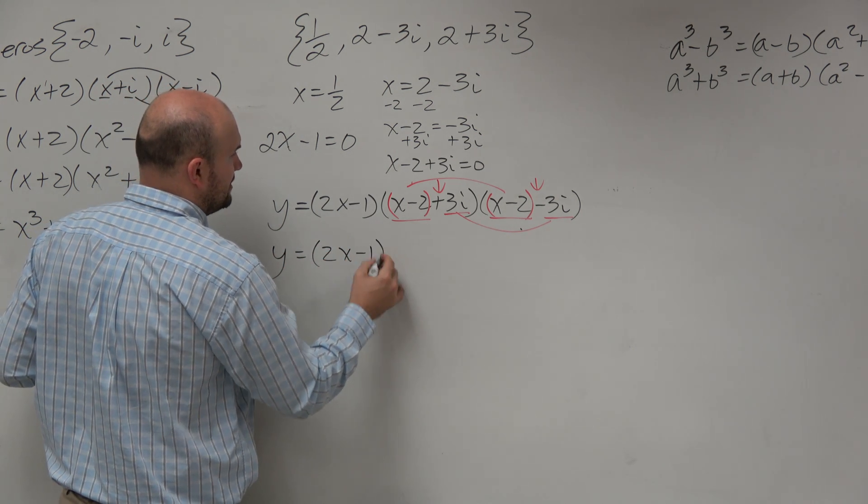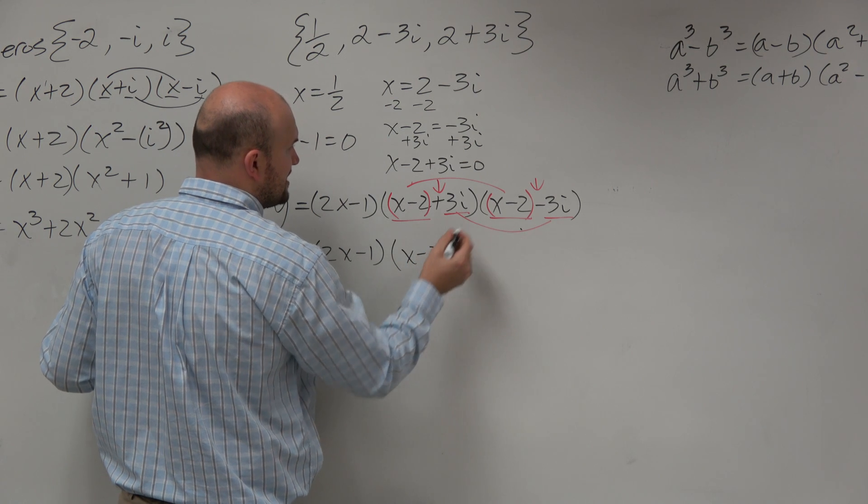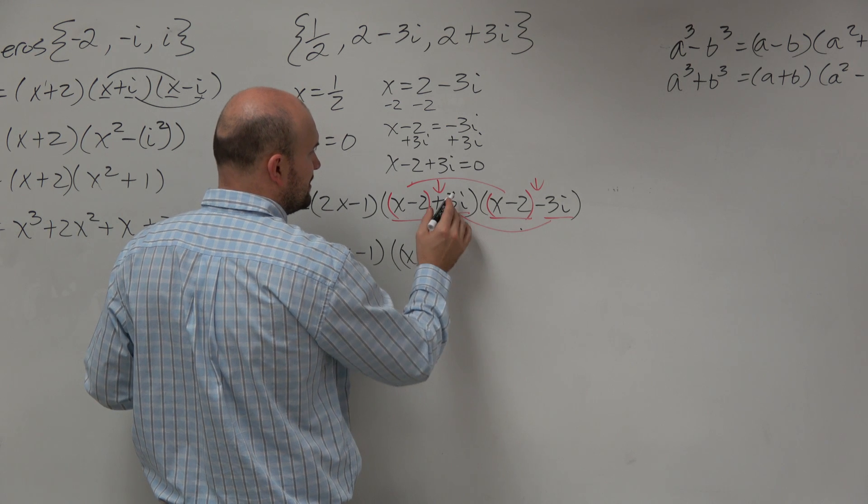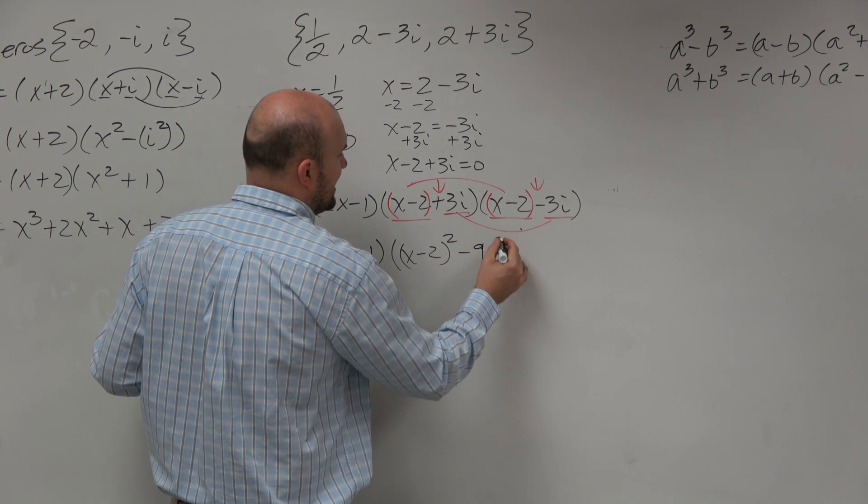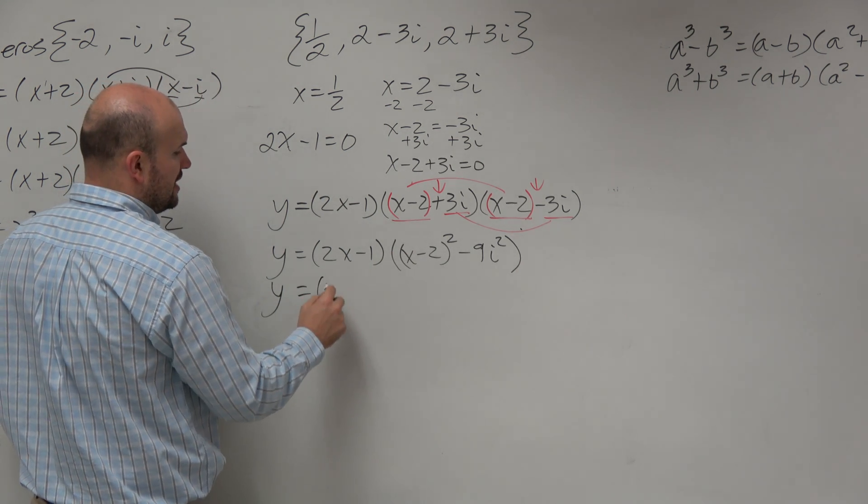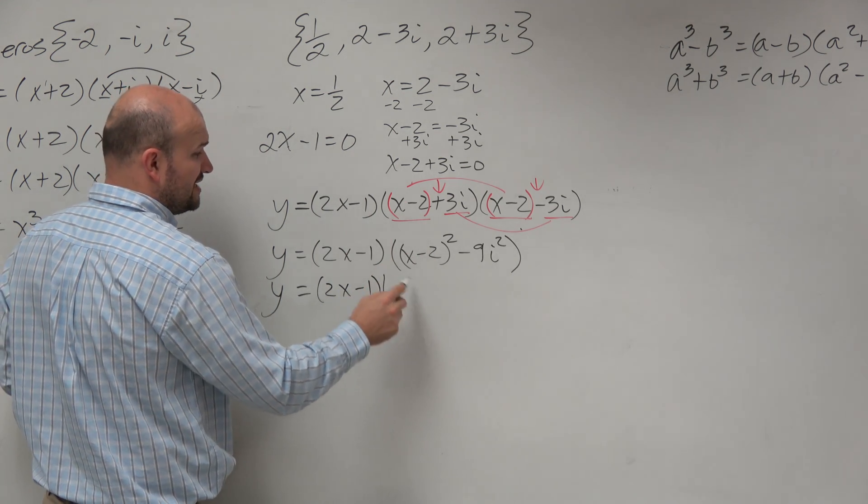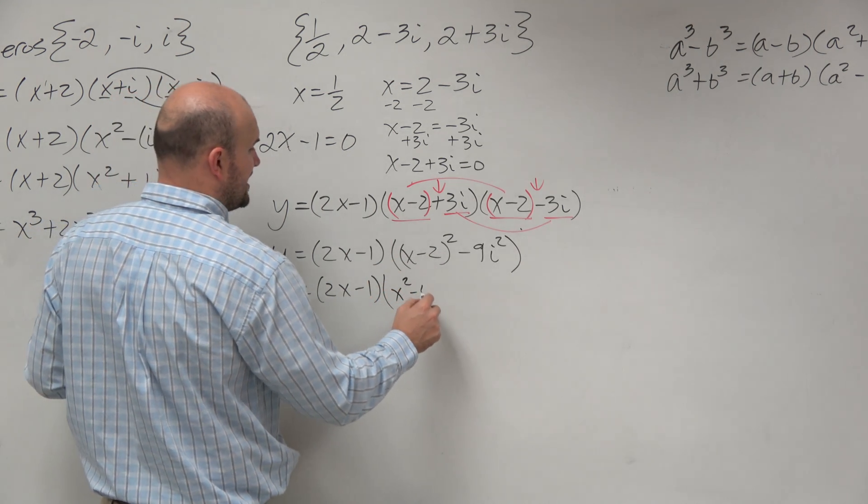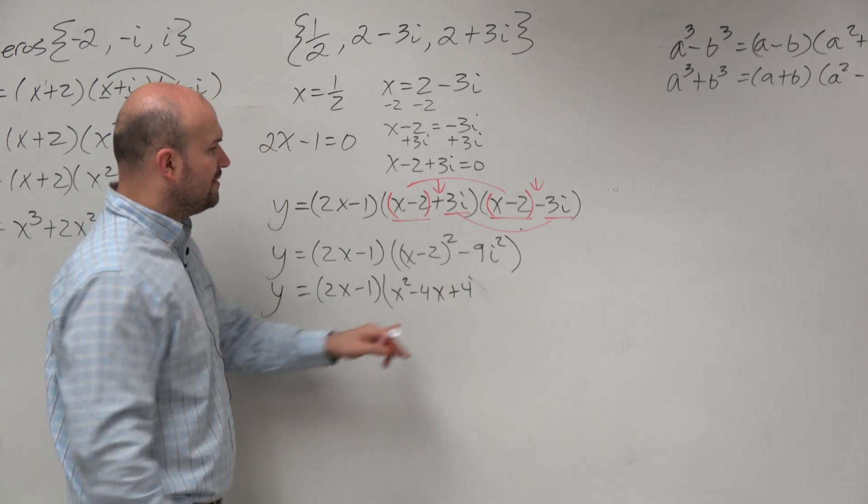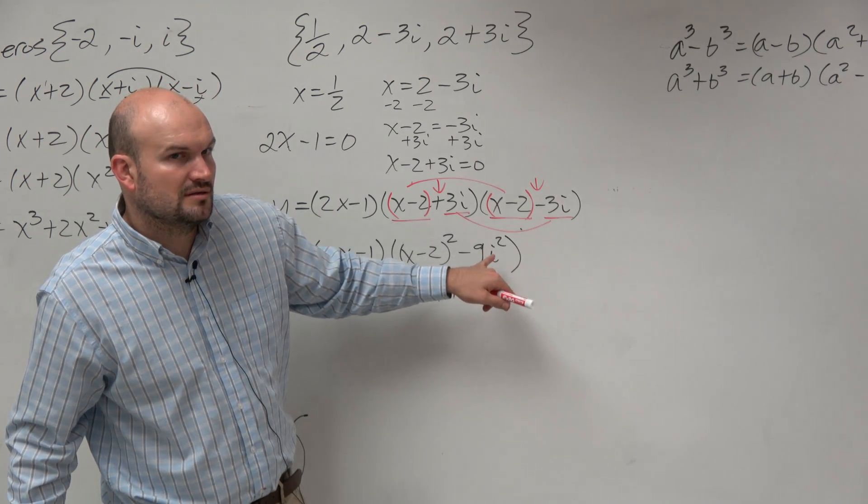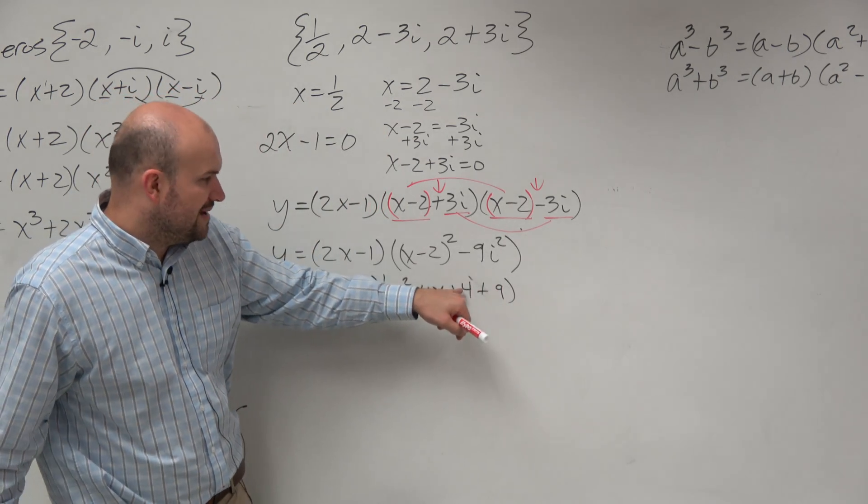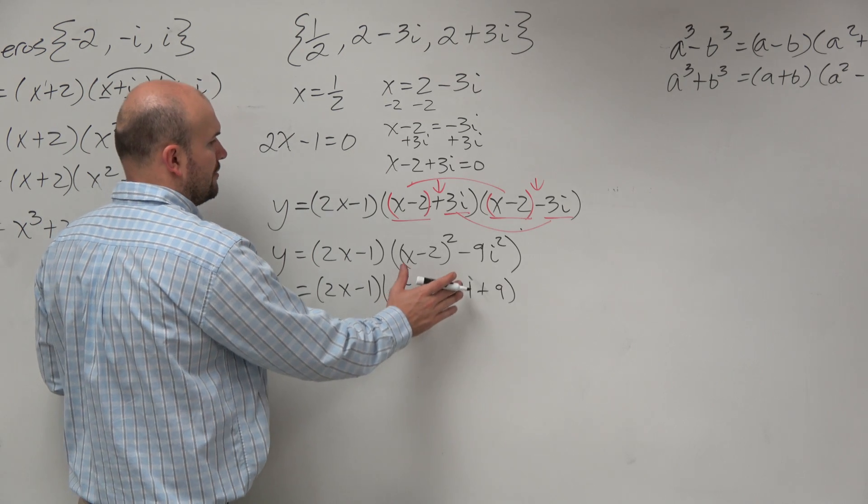So anyways, I get 2x minus 1 times, this is going to be x minus 2 times x minus 2, which is x minus 2 squared. I'll multiply that out later. 3i times negative 3i is negative 9i squared. x minus 2 squared, guys, that's a binomial squared. We've been doing plenty of expansions of those. That's just going to be x squared minus 4x plus 4. And then what did we say i squared was? Negative 1. So negative 1 times negative 9 is positive 9. Then we can combine these. 4 plus positive 9 is 13.